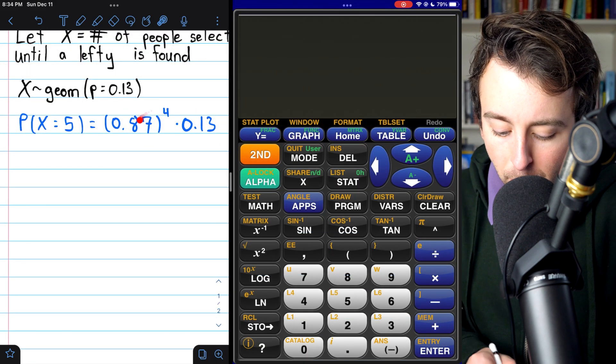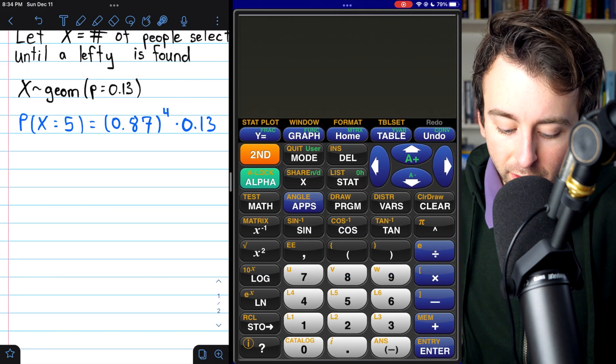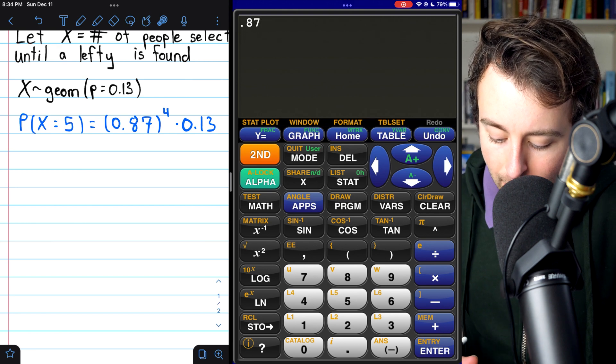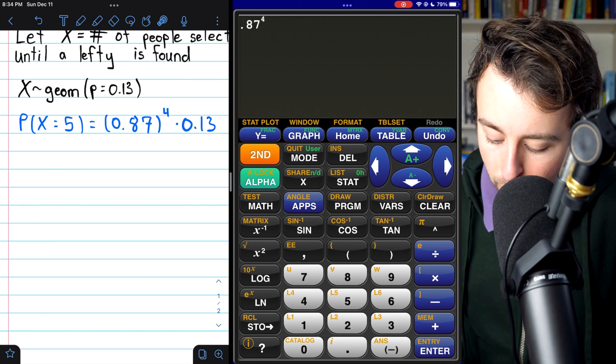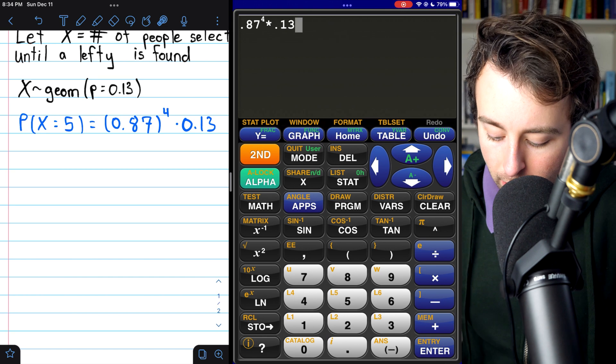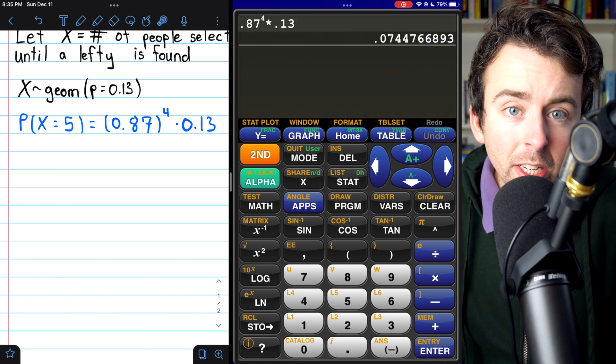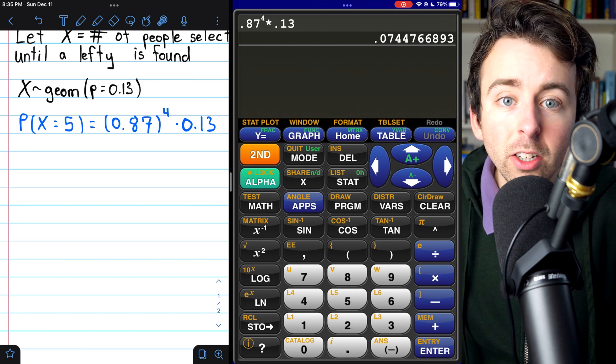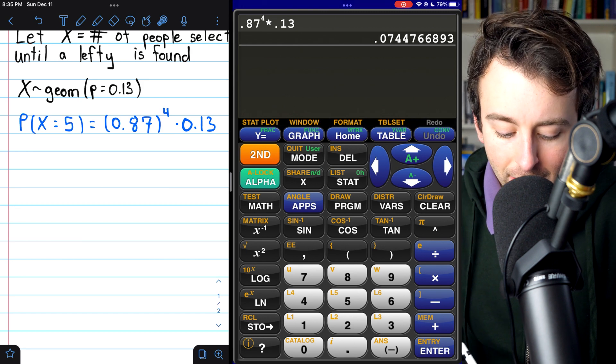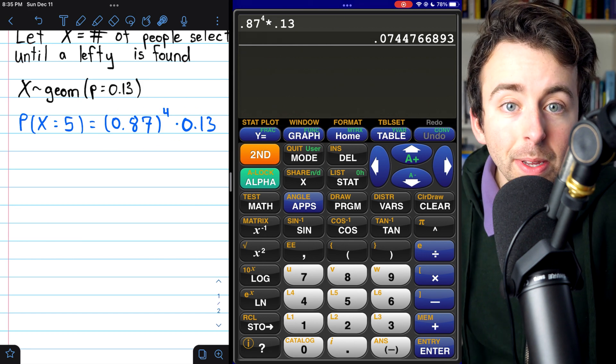Now, to calculate what this probability actually equals, we can just use our calculator. We could type in 0.87 to the power of 4, multiplied by 0.13, and get our probability of 0.07. Or we could use the calculator's built-in geometric distribution function.